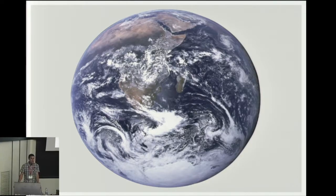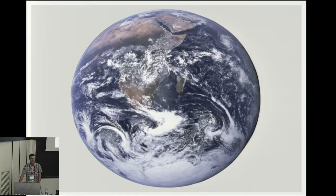Some of you may be familiar with this image right here — it's called the Blue Marble. It was taken by astronauts on their way to the moon back in the 70s. They kind of looked out the back window of the spacecraft and saw this full image of the Earth and took this picture. It's one of the most famous pictures of the Earth ever.